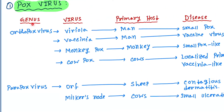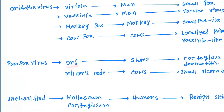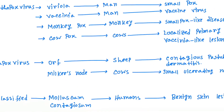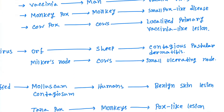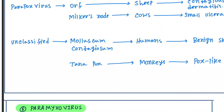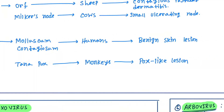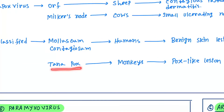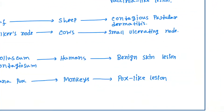Next genus is parapoxvirus. The viruses are ORF and milker's node. ORF primary host is sheep/goats and causes contagious ecthyma (ecthyma contagiosum). Milker's nodes primary host is cows and causes small ulcerating nodules. Unclassified genus: molluscum contagiosum — primary host is humans, causes benign skin lesions. Tanapox — primary host is monkeys, causes pox-like lesions.